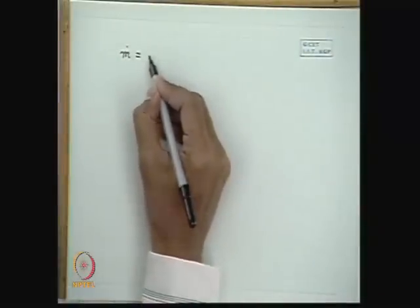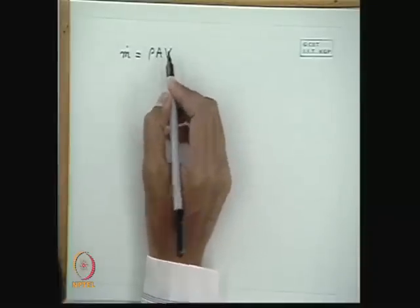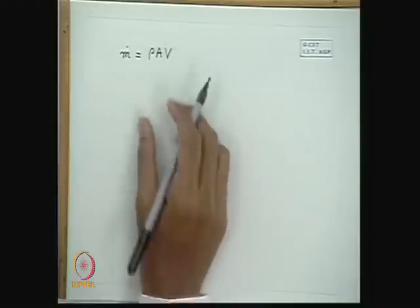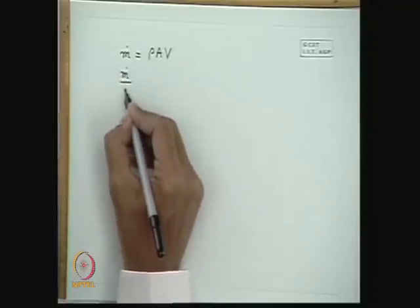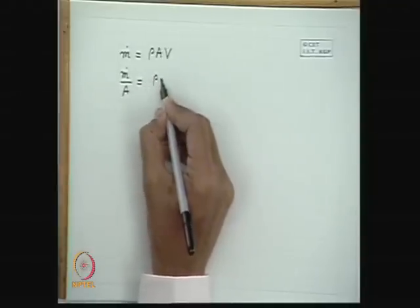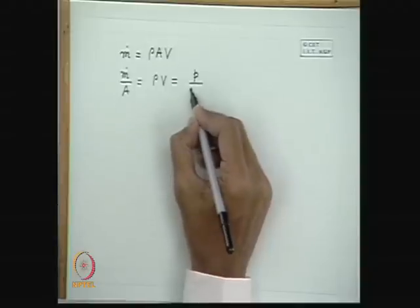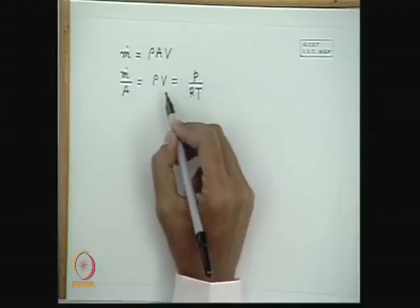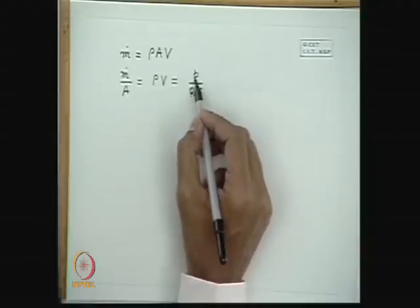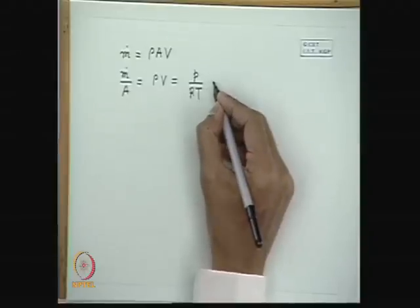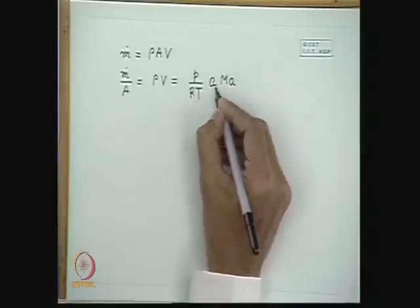If we look at the mass flow rate, the mass flow rate at any section in a compressible flow can be written as rho times A times V, where rho is the density, A is the area, and V is the flow velocity. With little algebraic manipulation, this can be written such that the mass flow rate per unit area equals rho times V, which can be written as P divided by RT — considering throughout this course the flowing medium is a perfect gas — and V can be replaced as A times Mach number, where A is the speed of sound.